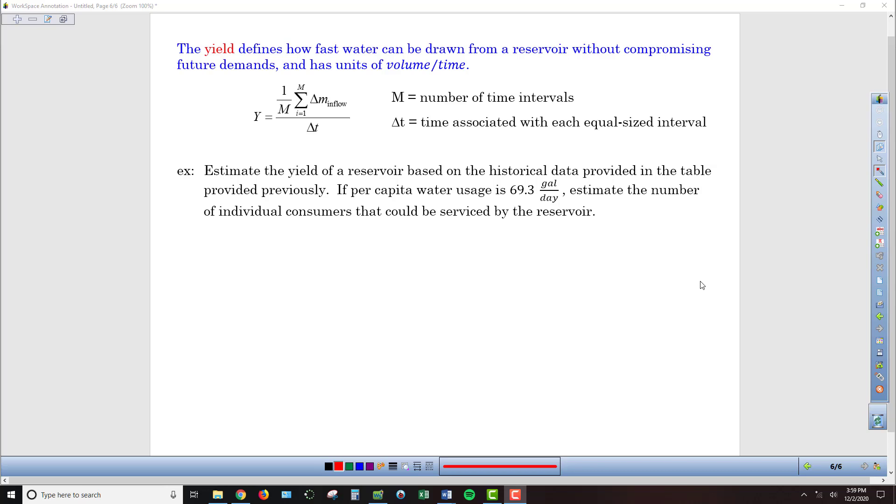Our last variable regarding water storage is yield. Yield is a measure of how fast water can be drawn from a reservoir without depleting it. On average, what is the amount per unit of time that we're able to take out and maintain status quo? If we're consistently taking out more than what flows in, we'll eventually deplete the reservoir.